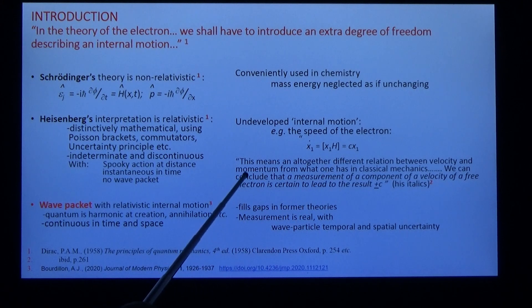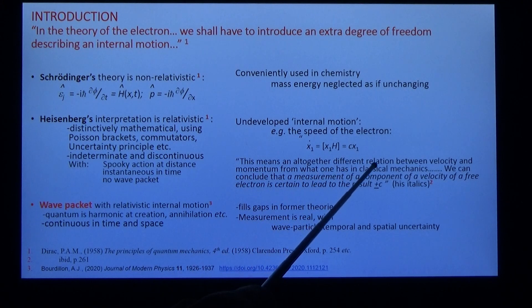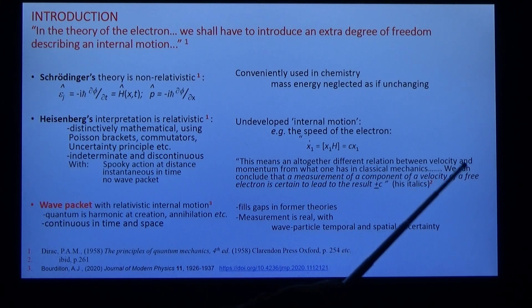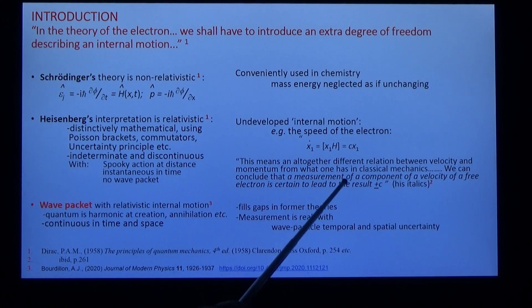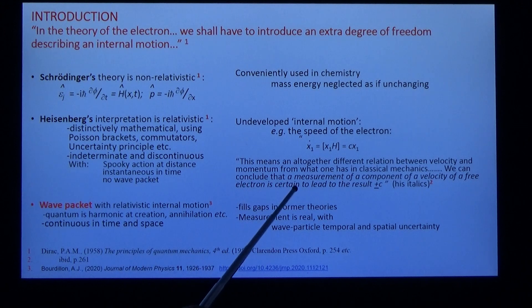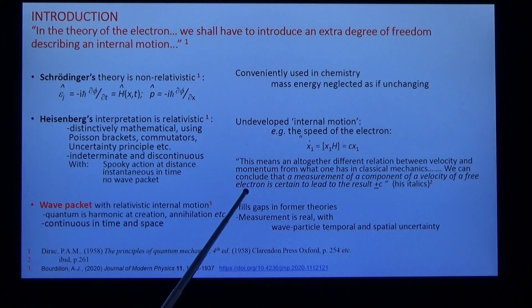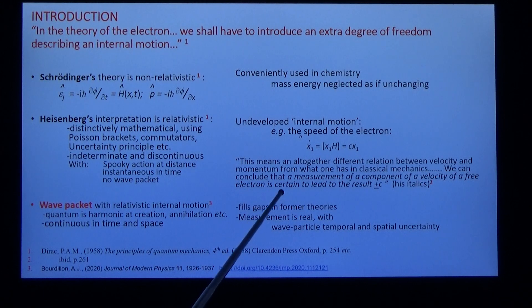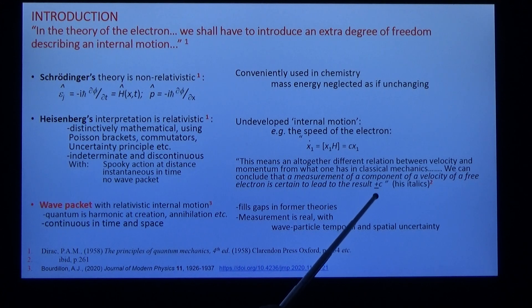He wrote: this means an altogether different relation between velocity and momentum from what one has in classical mechanics. We can conclude that a measurement of a component of velocity of a free electron is certain to lead to the result plus or minus c. I don't know how he got away with this in the light of special relativity.